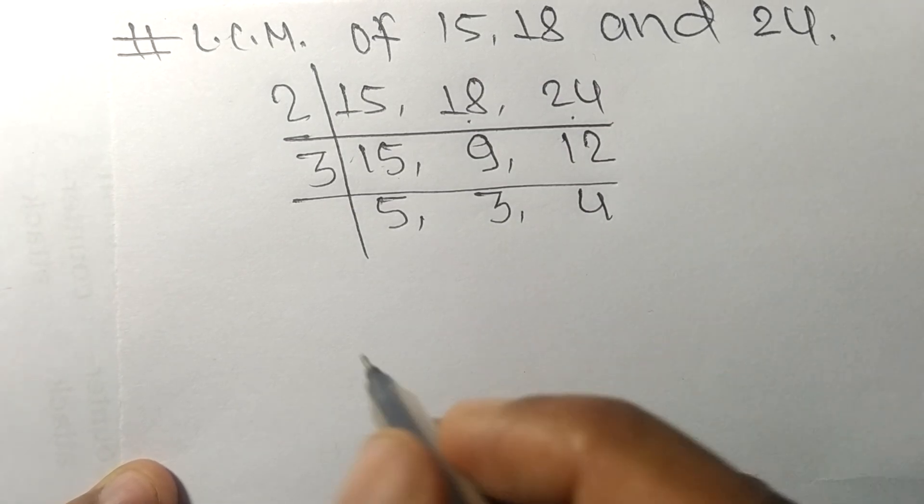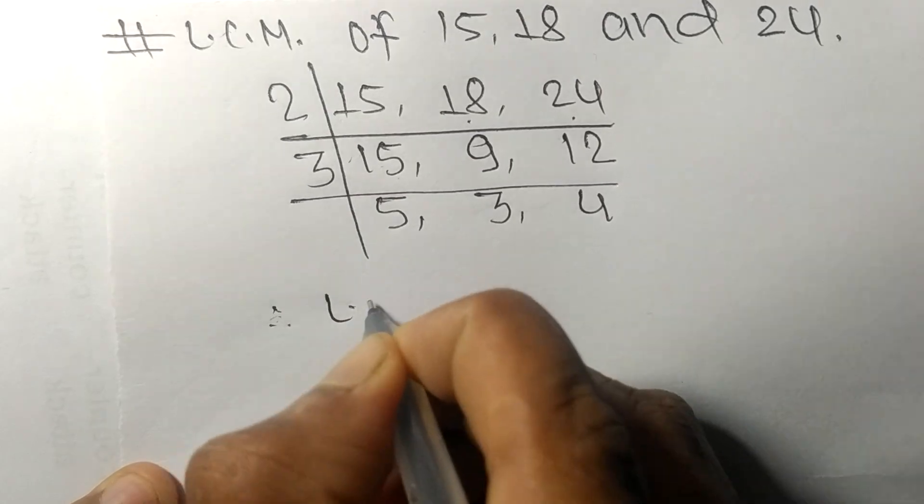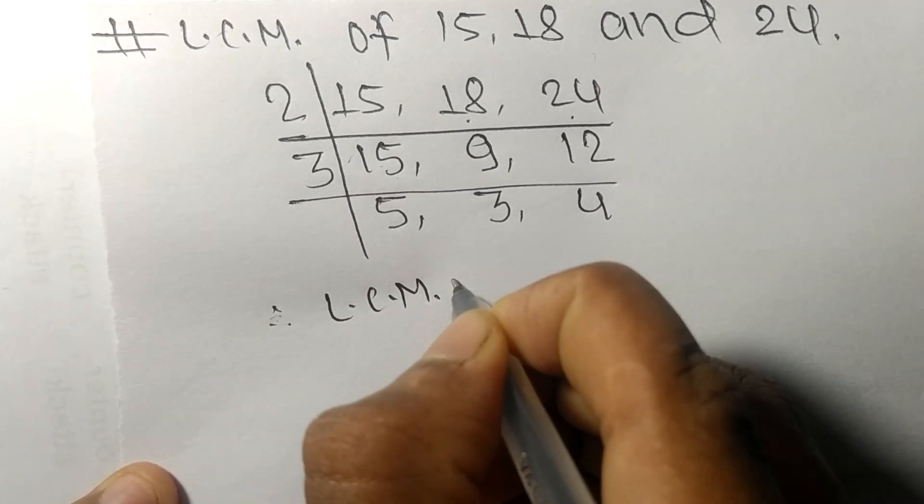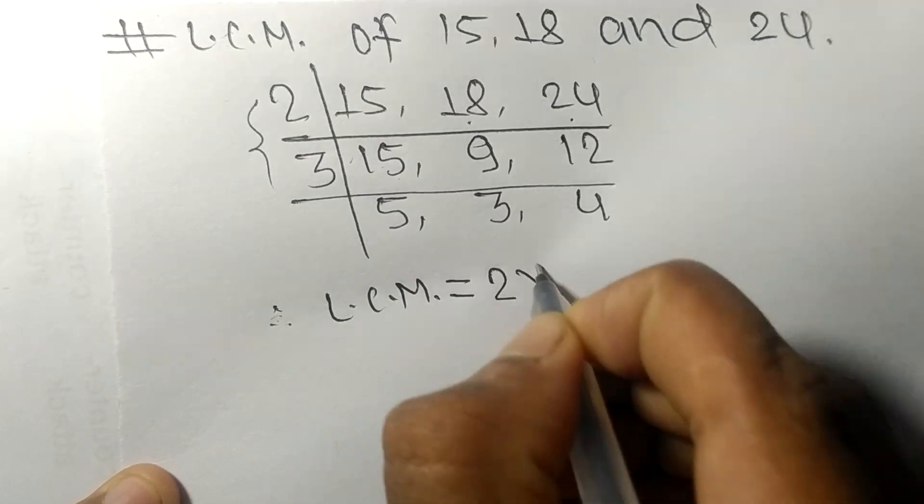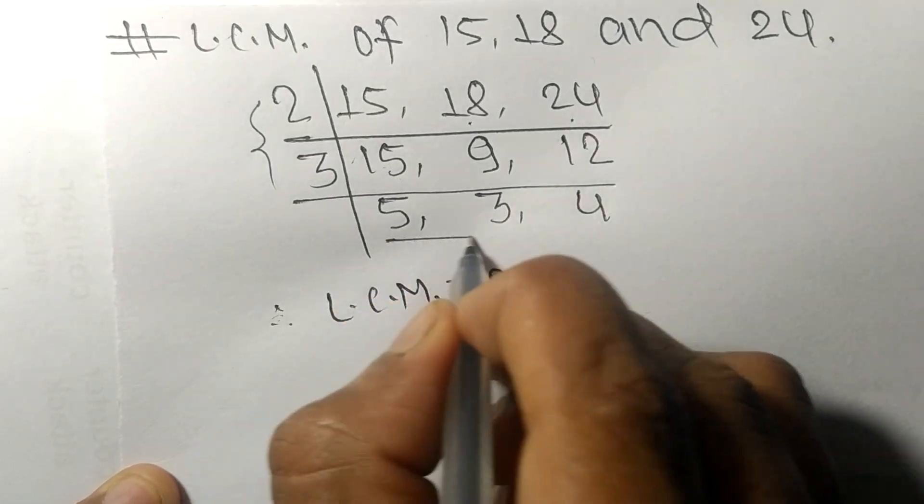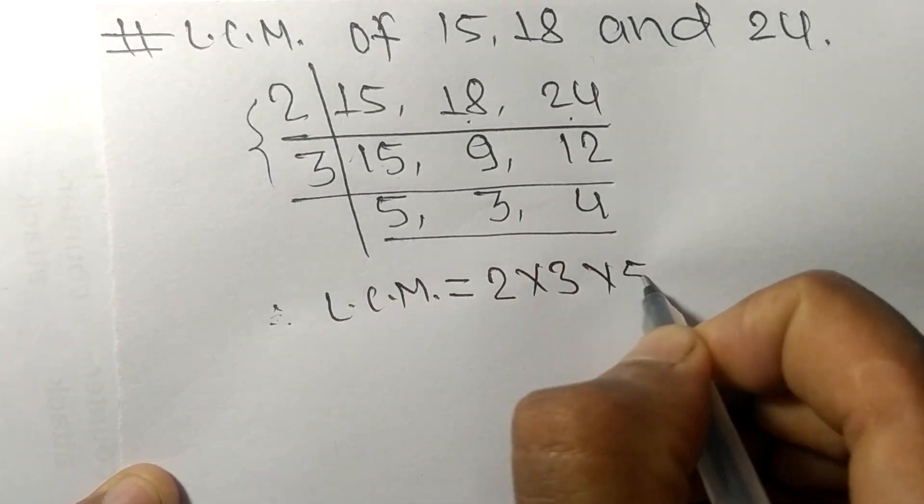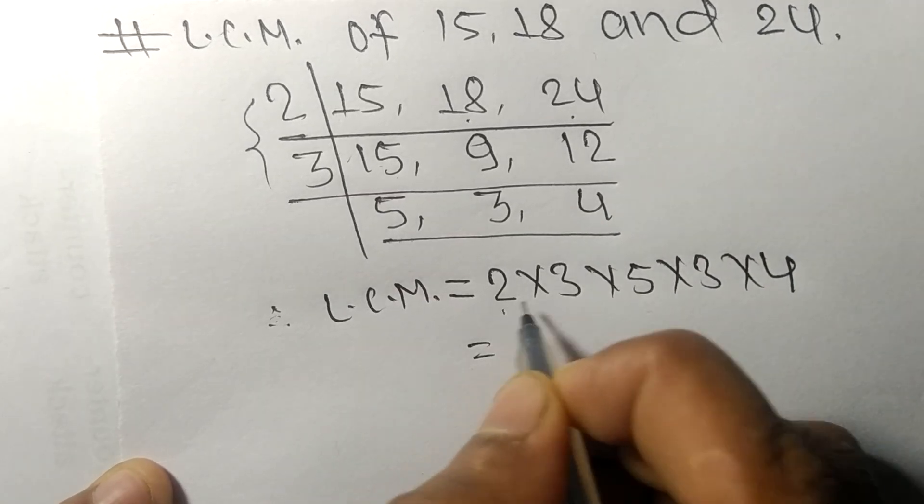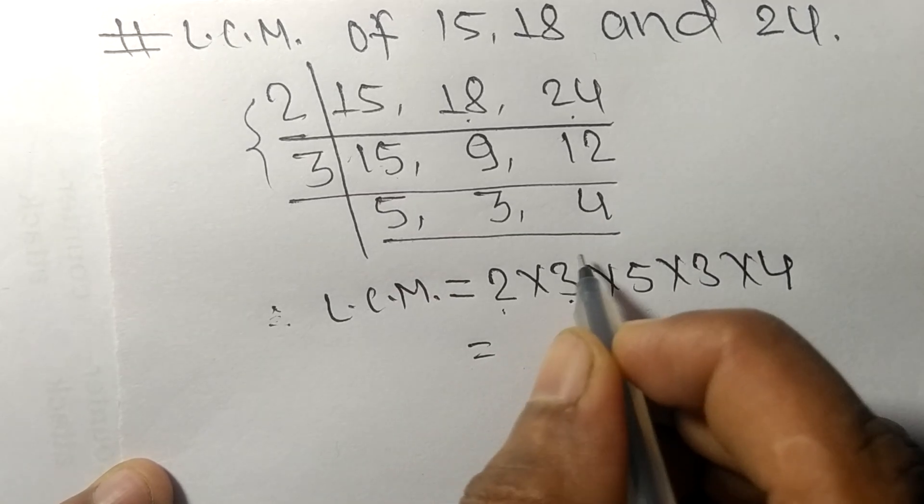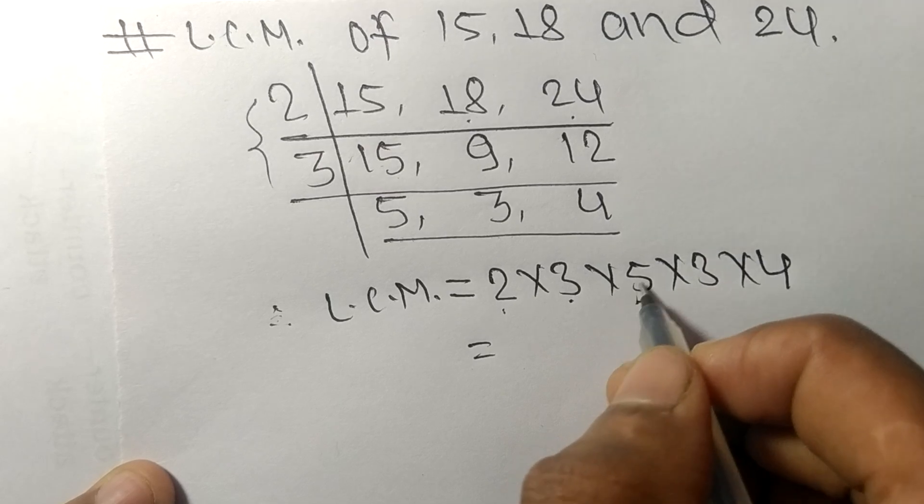Therefore the LCM is equal to, from this side it is 2 times 3, from this side it is 5 times 3 times 4. 2 times 3 means 6, 6 times 5 means 30, 30 times 3 means 90.